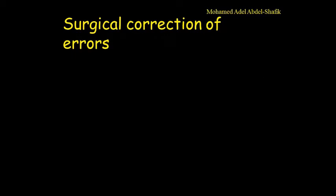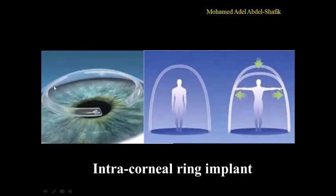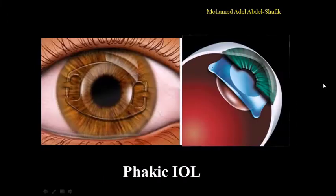We can correct myopia by glasses, by contact lenses, or surgically. In LASIK, we change the shape of the cornea to make it flatter. Or we can put intra-corneal rings to push the cornea to the outside, making the curvature of the central part flatter. Or we can put IOL attached to the iris, either in front of the iris or behind the iris. So this is something like a contact lens, but we put it inside the eye. Thank you for your attention.